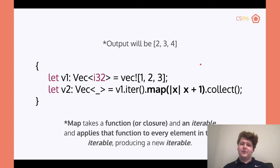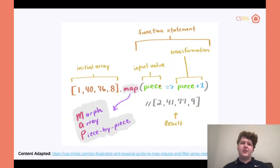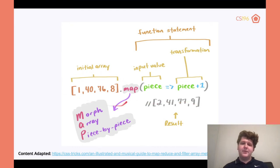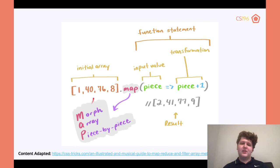It takes a function and an iterable and applies it to every element in the iterable, producing a new iterable — that's why we have to use dot collect. This is a JavaScript example, so it'll look a little different, but you give it some sort of array, say dot map, then you give it the input and output. Everything inside the map will be the function — and this is an anonymous function in JavaScript. What map actually stands for is 'morph array piece by piece,' so every piece is going to go from 1 to 2 because you're just adding 1 to it.